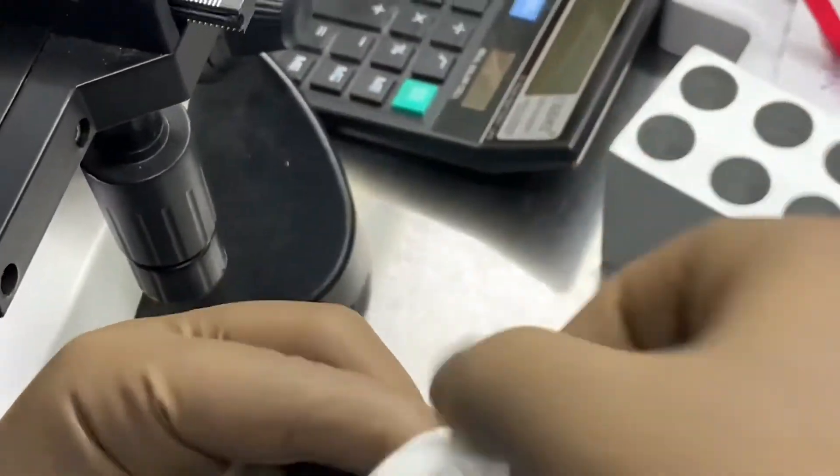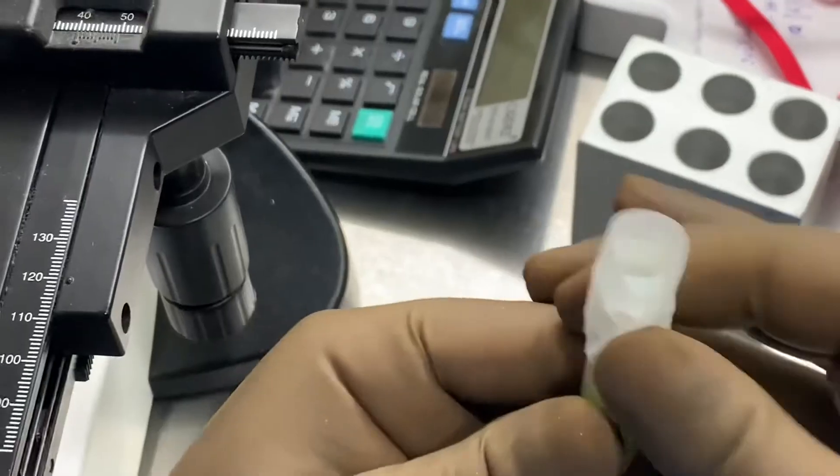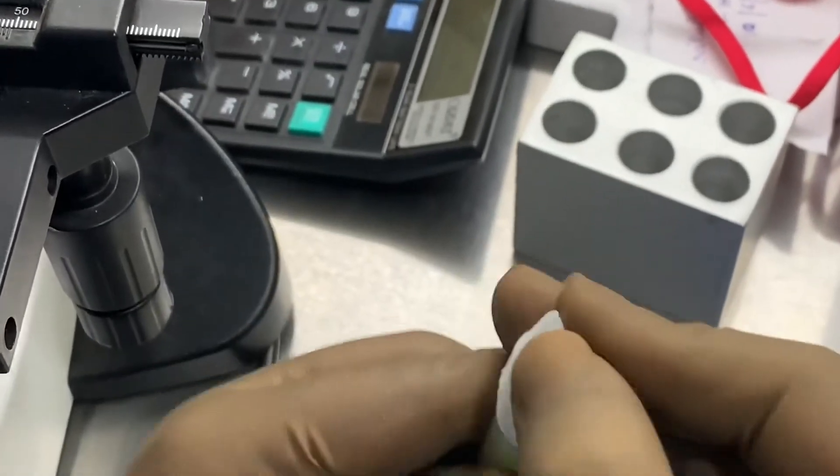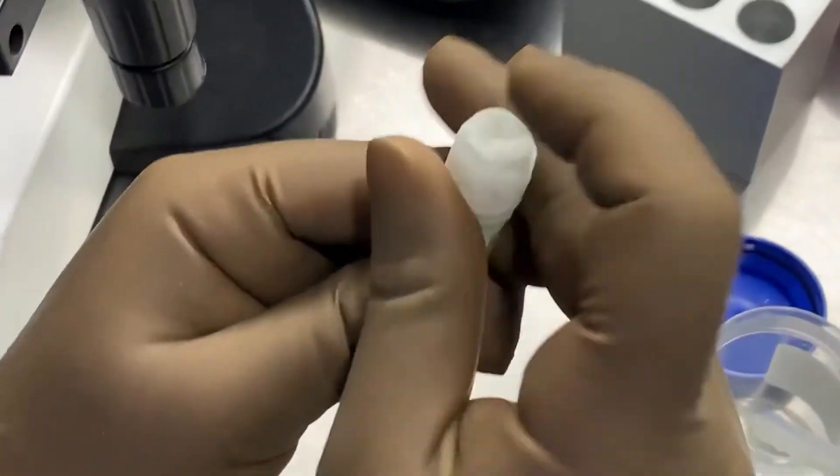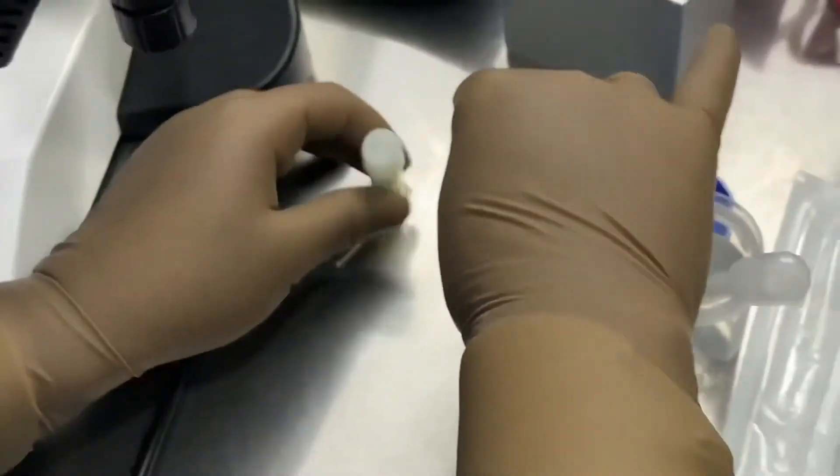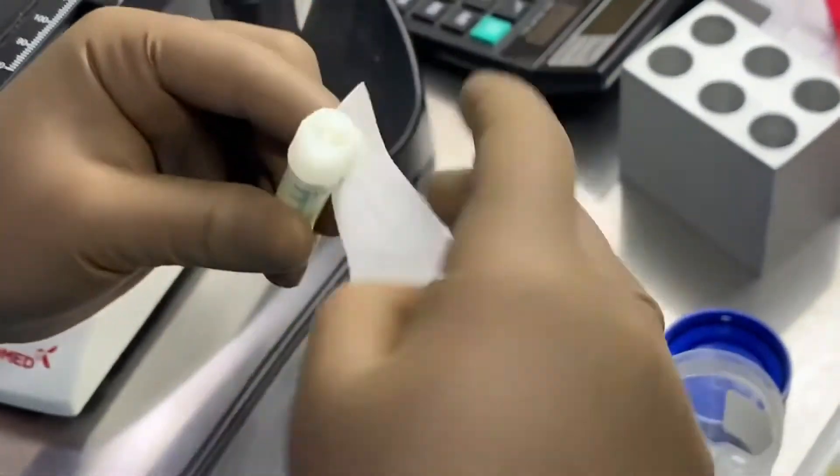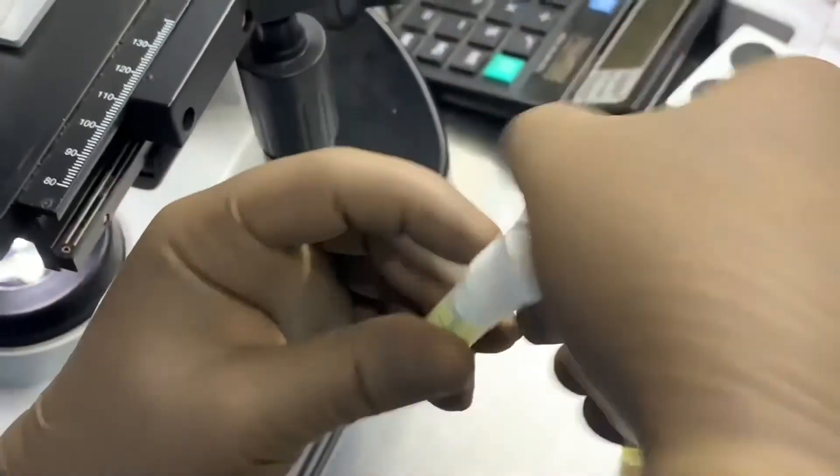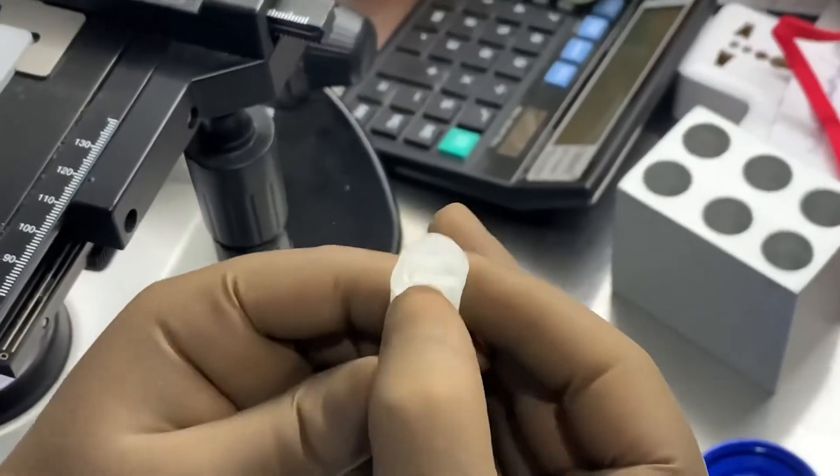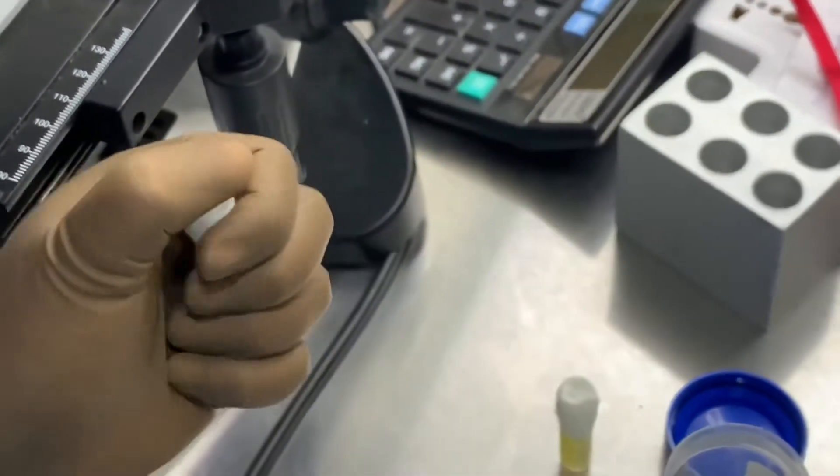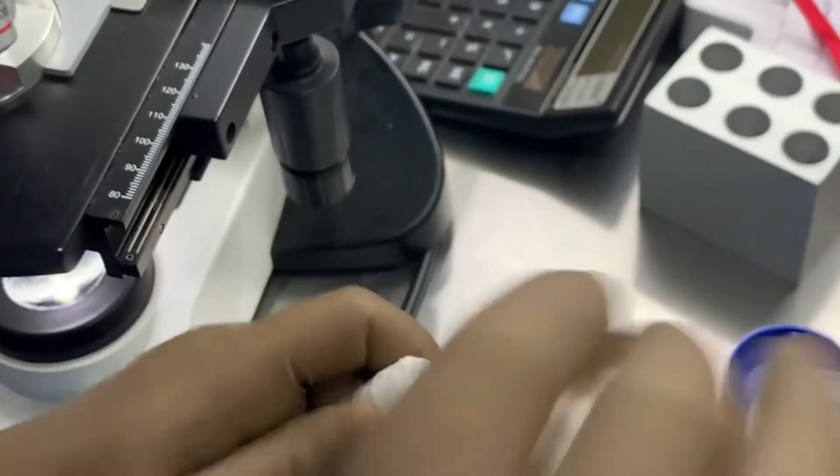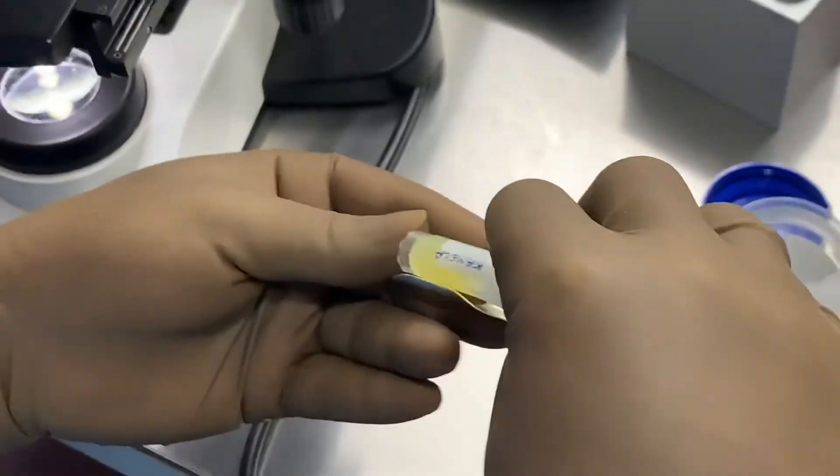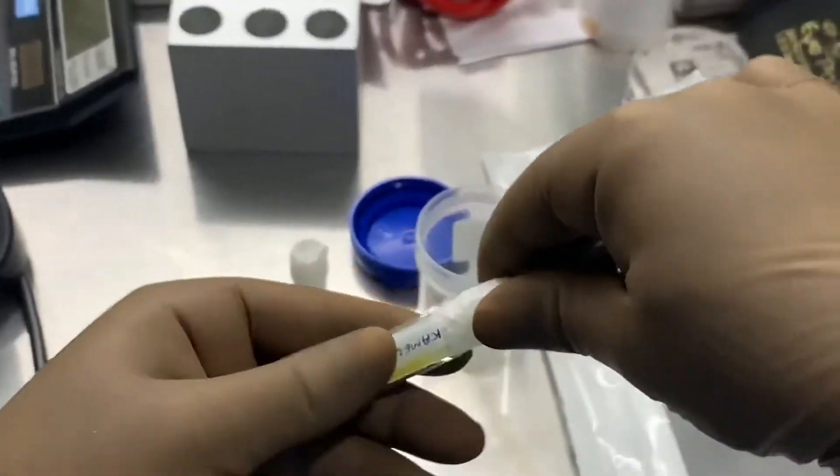Here we can see that we are sealing that particular cryovial with a micropore. So it will be double ensuring that there won't be any kind of spillage inside the liquid nitrogen. At least half an hour and then it will be plunged, totally emerged inside the liquid nitrogen.